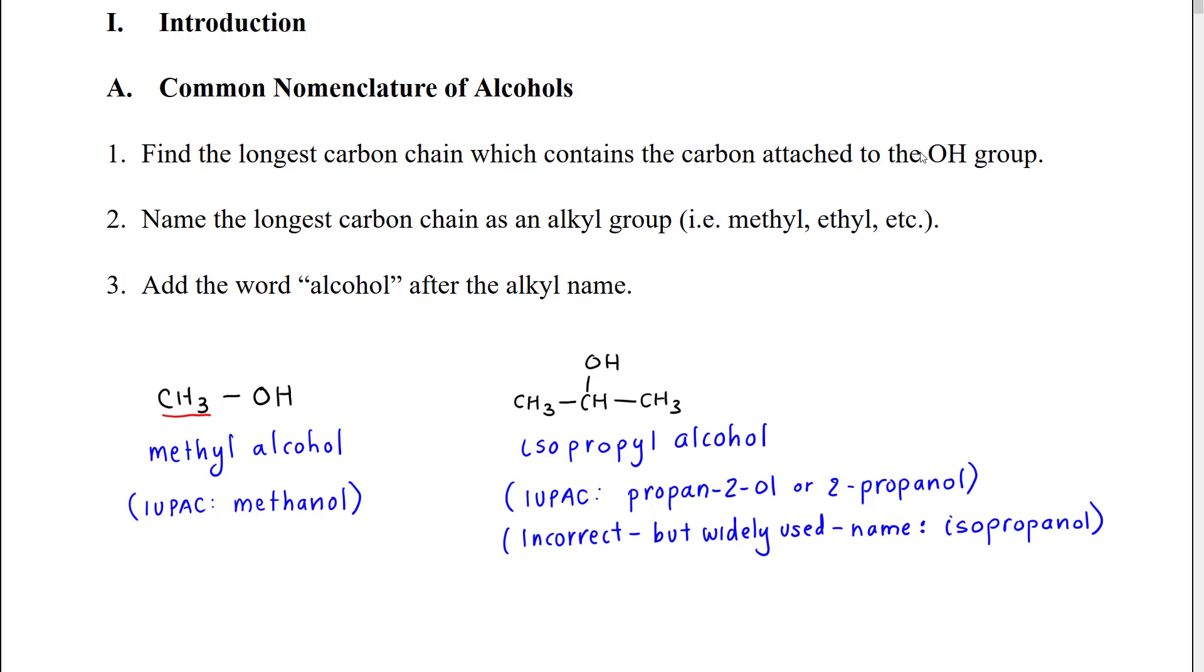The way this common nomenclature works is that first, we find the longest carbon chain attached to the OH group. We name that carbon chain then as an alkyl group, in other words with a YL ending, and then we add the word alcohol separated by a space after the name of that alkyl group.